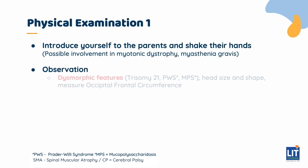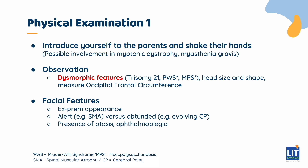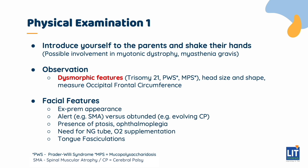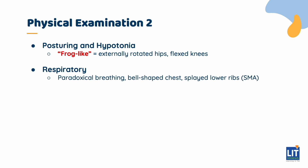In the child, observe for dysmorphic features and measure the occipital frontal circumference. Look at the facial features. Is the child alert or obtunded in appearance? Examine the eyes — look for ptosis as well as the presence of any ophthalmoplegia. Look for any interventions already in place, such as a nasogastric tube, oxygen supplementation, or non-invasive ventilatory support like CPAP. Always check the tongue for fasciculations. Inspect the posturing in detail and look at the way the child is breathing. Is there an abnormal chest shape or is paradoxical breathing present?